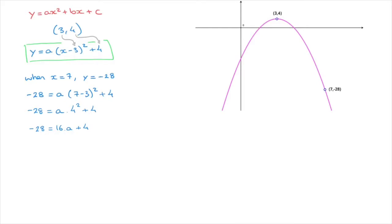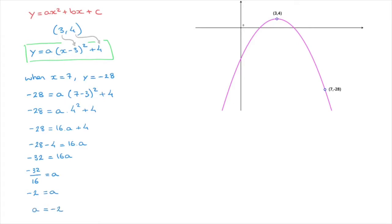We now solve for a. Subtracting 4 from each side gives negative 28 minus 4 equals 16a, which is negative 32 equals 16a. Dividing both sides by 16 gives negative 32 over 16 equals a, and since negative 32 divided by 16 equals negative 2, we have a equals negative 2. Combining this with the vertex form, this parabola's equation is y equals negative 2 times x minus 3 squared plus 4.